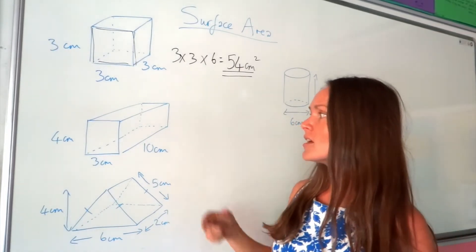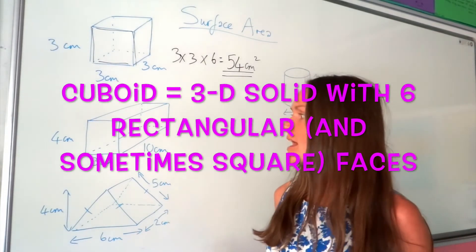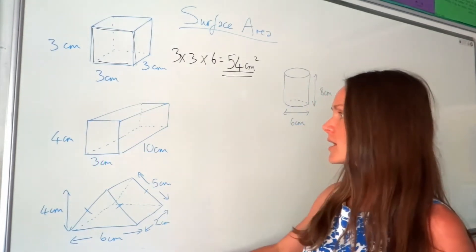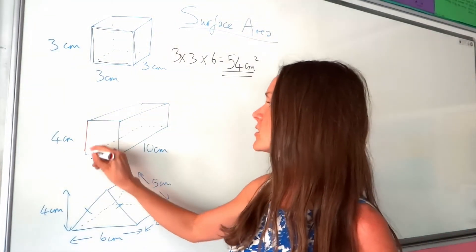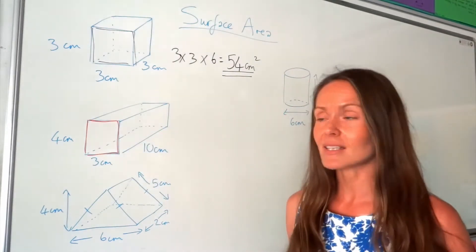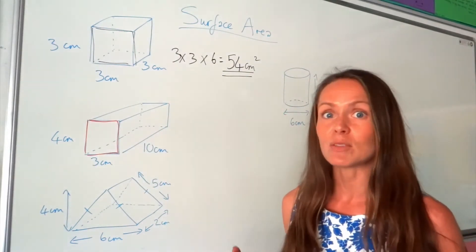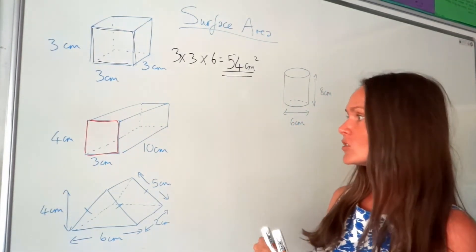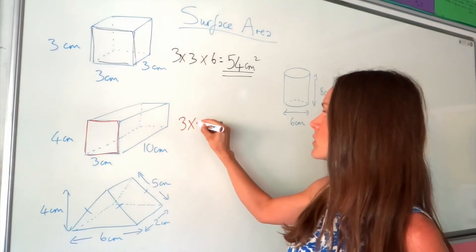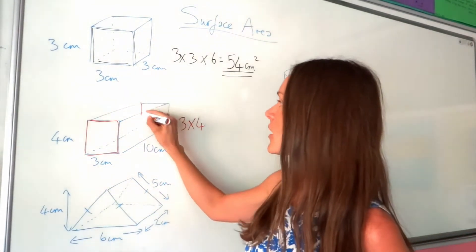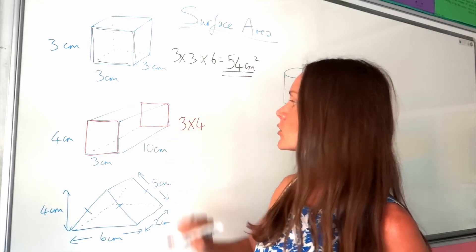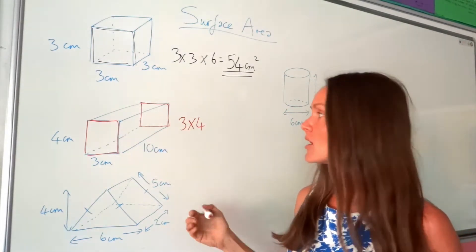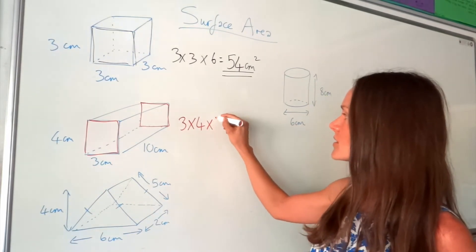Now here we've got a cuboid, so again there are 6 sides, except this time they're all different sizes. So to start with I'm just going to look at the end part here. This is a rectangle, so the area is base times height, just like for a square. So I need to do 3 times 4. And if you look closely, there's another one over here that's identical to that one, so there are 2 that are the same area — I need to multiply that answer by 2.